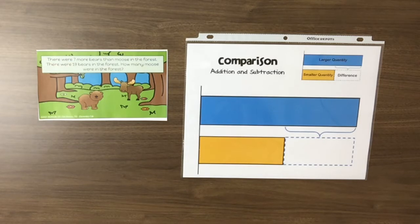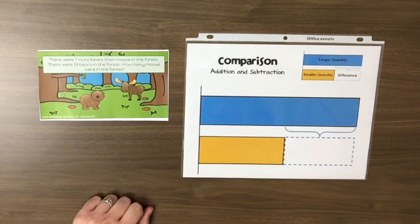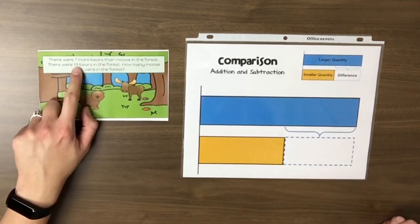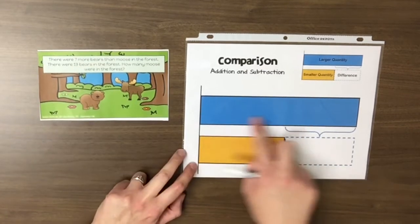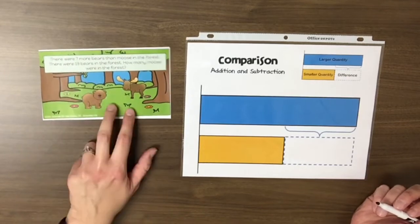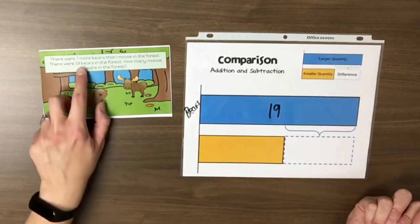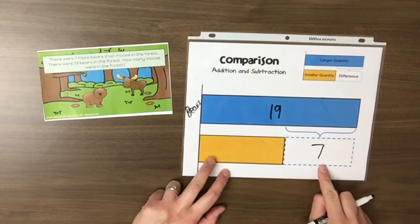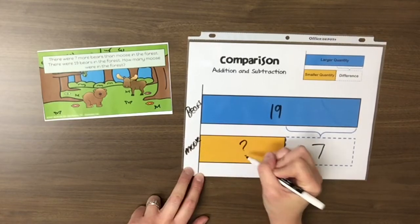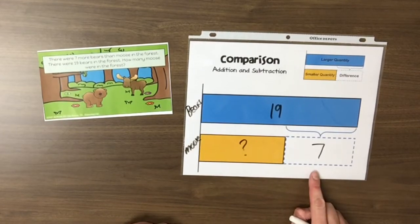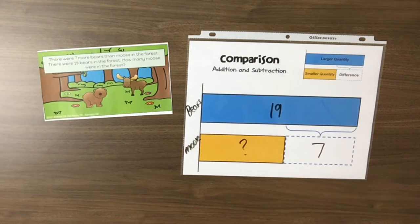a student may incorrectly assume that 'more' always means that addition must be used. Here's an example: There were seven more bears than moose in the forest. There were 19 bears in the forest. How many moose were in the forest? If we model that on the strip diagram, we know that there were seven more bears than moose, which means bears is the larger quantity. We know there were 19 bears, and because there are seven more bears than moose, subtraction rather than addition will be used to solve this problem.